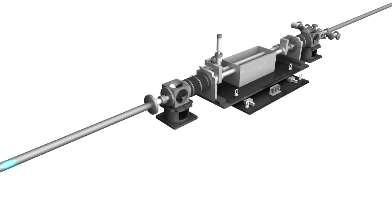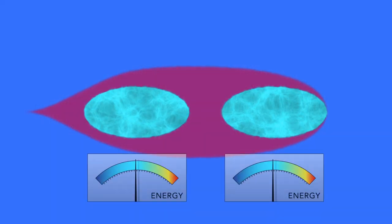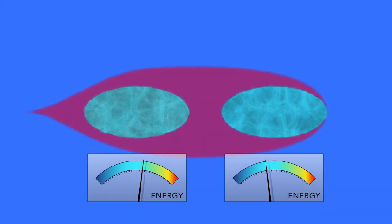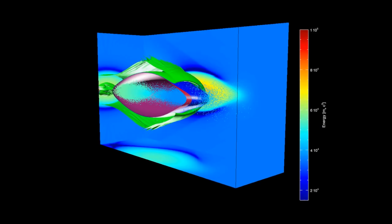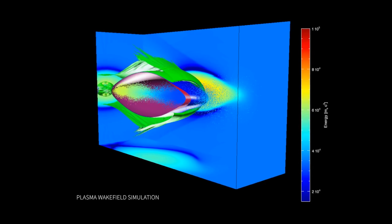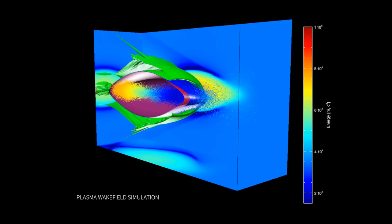So the first bunch of electrons enters the plasma and acts like a plow, and it pushes all of the plasma electrons out of the way. Left behind inside of that wake are the positively charged atoms that haven't moved because of their mass. The positive charge of those atoms left behind then pulls the plasma electrons back in toward the axis. The second bunch of electrons traveling behind the drive bunch is inside of this wake structure, and it experiences the strong electric fields that then allow it to gain a lot of energy in a very short amount of space.